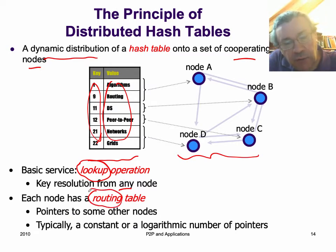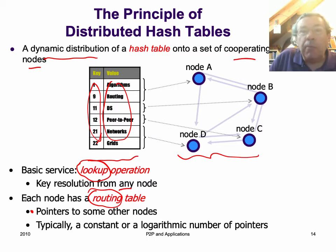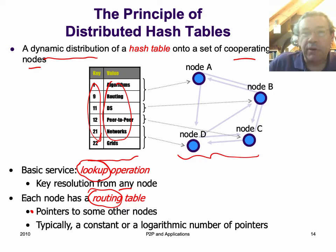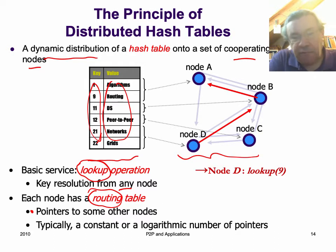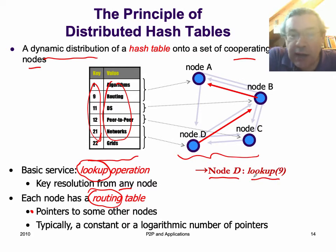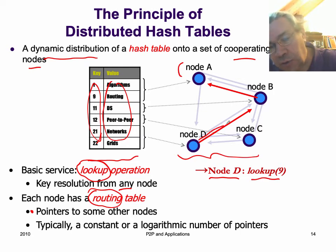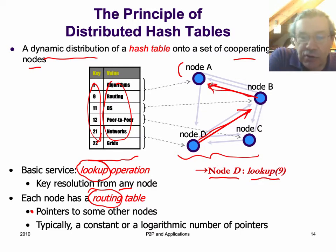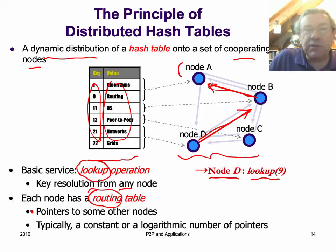Each node has a routing table and pointers to other nodes. When you look up a key and it's not at the node where you are, you will route to the node where it is. You can look up a key from any node. For example, if I'm on node D and I look up key 9, but 9 is not stored at D — it's stored on A — then the system will do routing, sending messages from D to B to eventually get to A, and then the answer comes back.